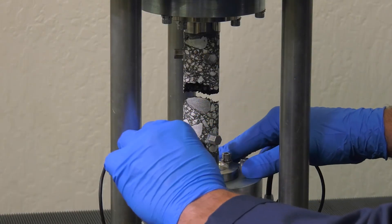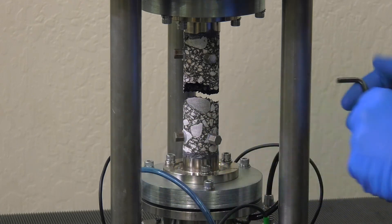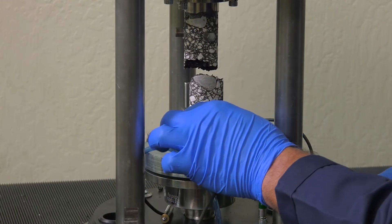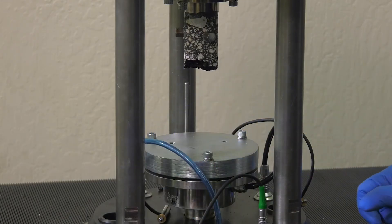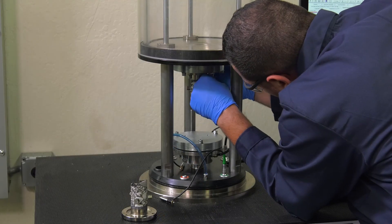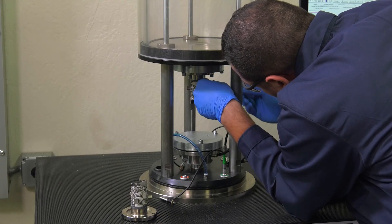Remove the LVDT clamps. Remove the screws from the lower platen and take out the bottom part of the specimen. Loosen and remove the screws from the upper platen and take out the top part of the specimen.